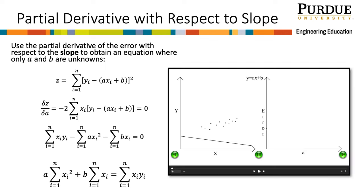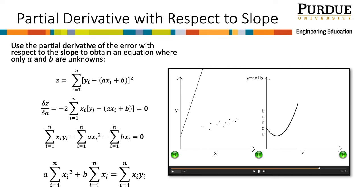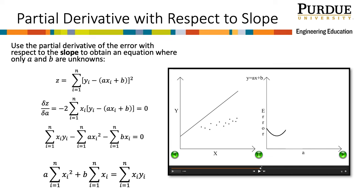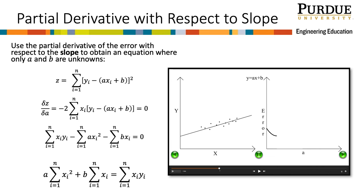Here I show you an animation of what the partial derivative with respect to slope does. Notice that on the left graph, the line is fixed with a spot on the y-intercept, but the slope is changing. As it moves, it gets closer to modeling the data and then farther away. Look at what the graph of the error term z versus the slope a does. Remember our goal was to minimize the error term, so when the parabola is at its vertex, we get our minimum. Notice this is also where the line on the left appears to model the data the best.